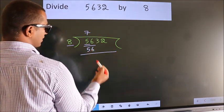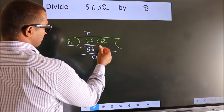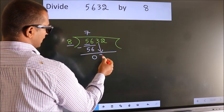Now we should subtract. We get 0. After this, bring down the beside number. So, 3 down.